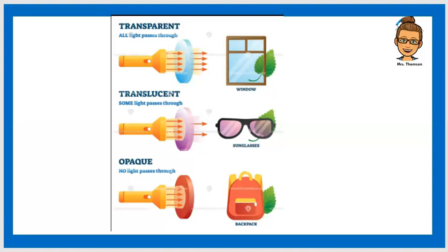We also learned the term translucent where some of the light passes through. An example of translucent is very thin tissue paper or frosted glass.